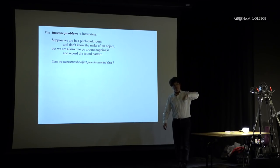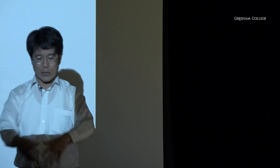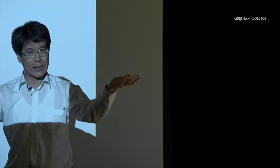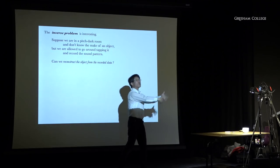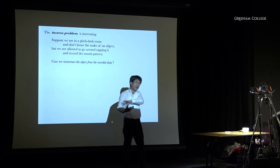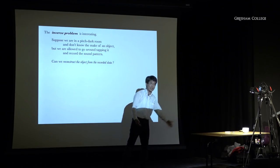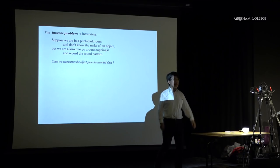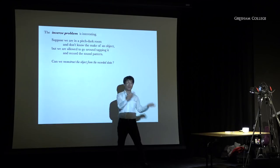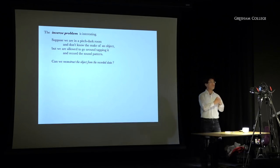This is called the inverse problem. In many areas of mathematical sciences, you set up a model — perhaps a partial differential equation — and solve it to predict the future or explain the behavior of a system. That's solving the problem forward. But in many other circumstances, you have observed data and have to figure out backward what caused it — recovering the underlying mechanism from the result.